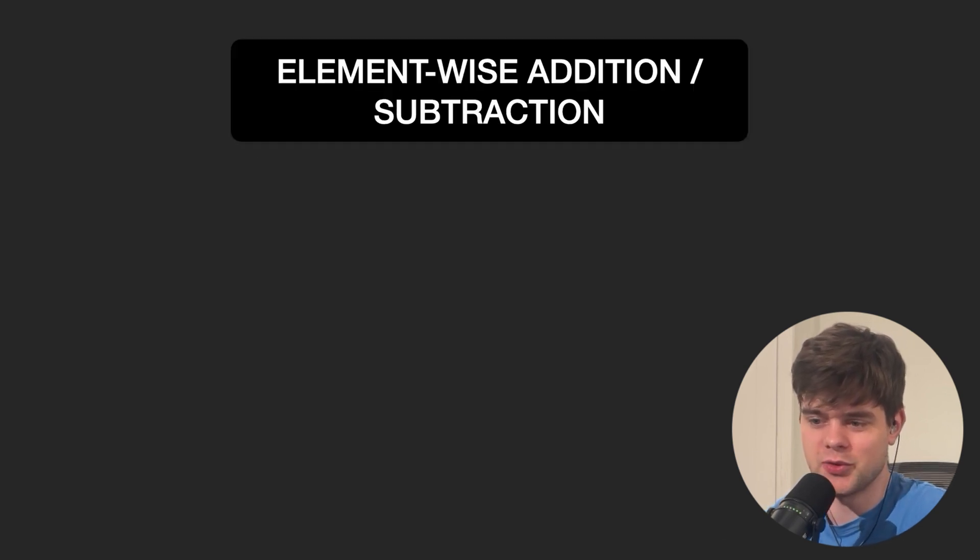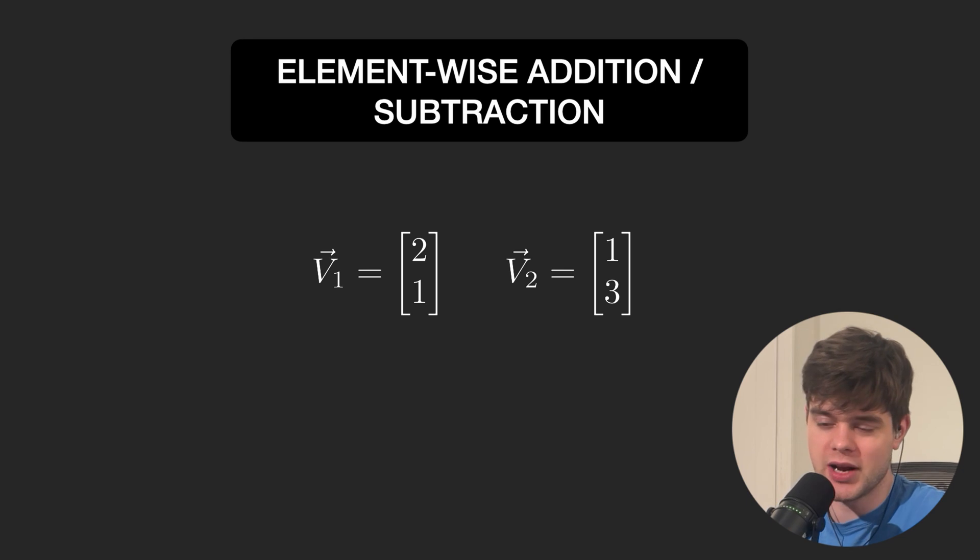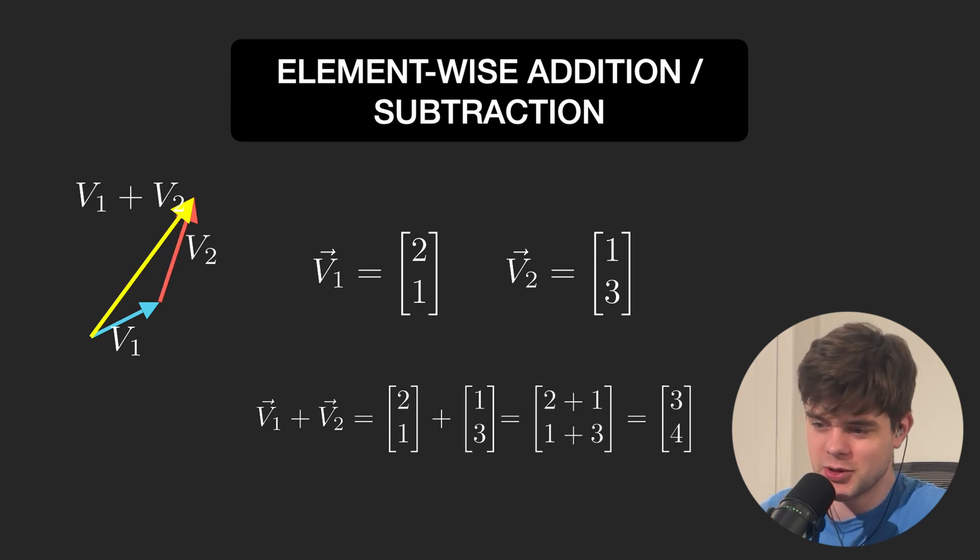With vectors we can perform element-wise addition and subtraction if each vector has the same number of components. We just iterate through both vectors and add or subtract corresponding components. It results in a new vector.